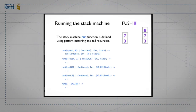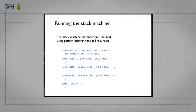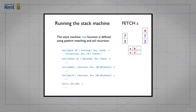Similarly, for fetch we do exactly the same except that the value pushed onto the stack is fetched using our lookup function from the environment. So we look up the variable's value in the environment and push it onto the stack. In both push and fetch cases, we only pattern match over the program argument — the environment and stack are matched by variables.